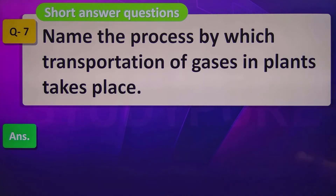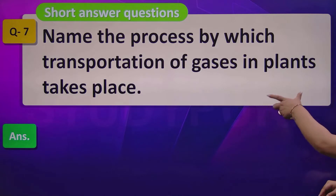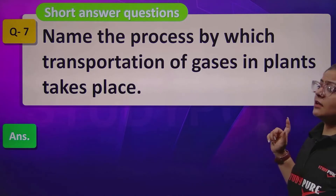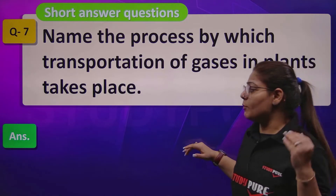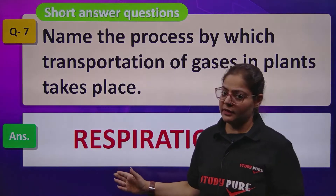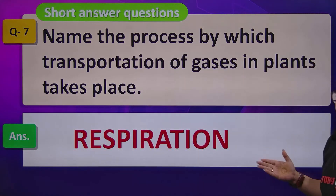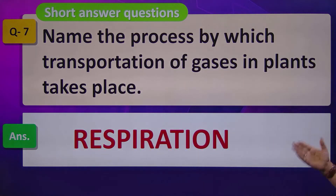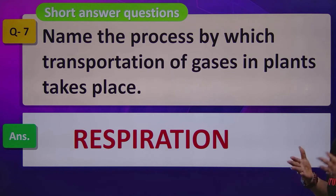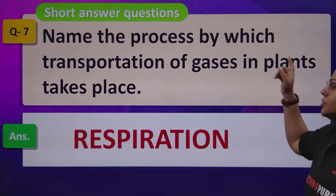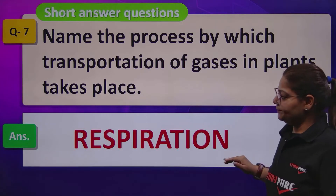Question number 7: Name the process by which transportation of gases in plants takes place. Transportation of gases ka seedha relationship is topic se hai. Respiration is the process in which exchange and transportation of gases takes place. So the answer is respiration.